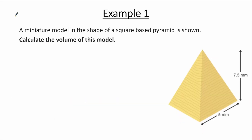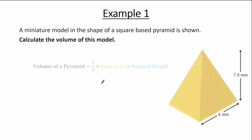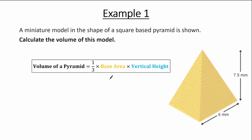Let's take a look at example one. A miniature model in the shape of a square-based pyramid is shown — calculate the volume of this model. The base is a square, so if one side length is 5 mm, all sides of the base are 5 mm. We are also given the vertical height of 7.5 mm. To find the volume, we use the formula: volume of a pyramid equals one-third multiplied by base area multiplied by vertical height. The base area is 5 squared.